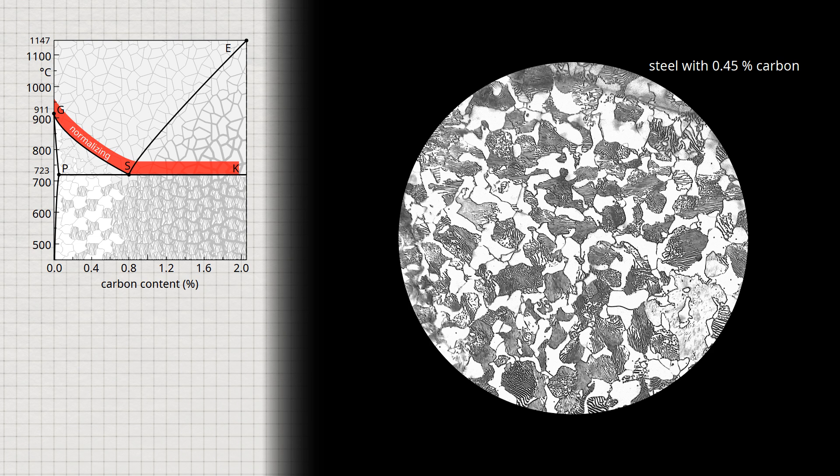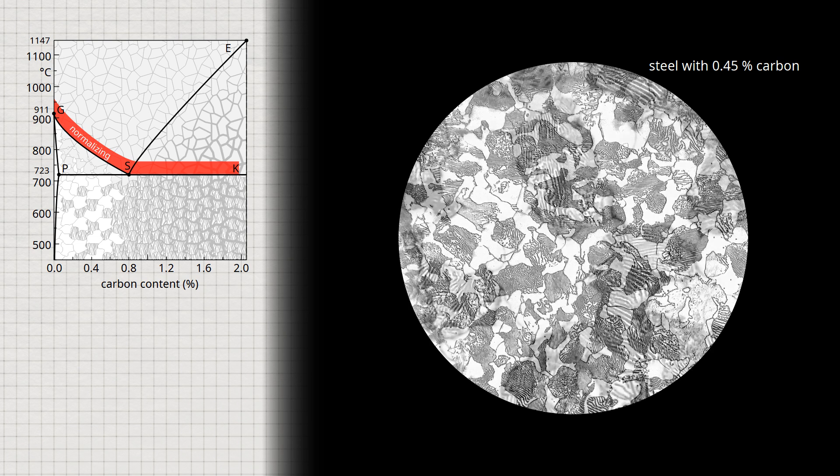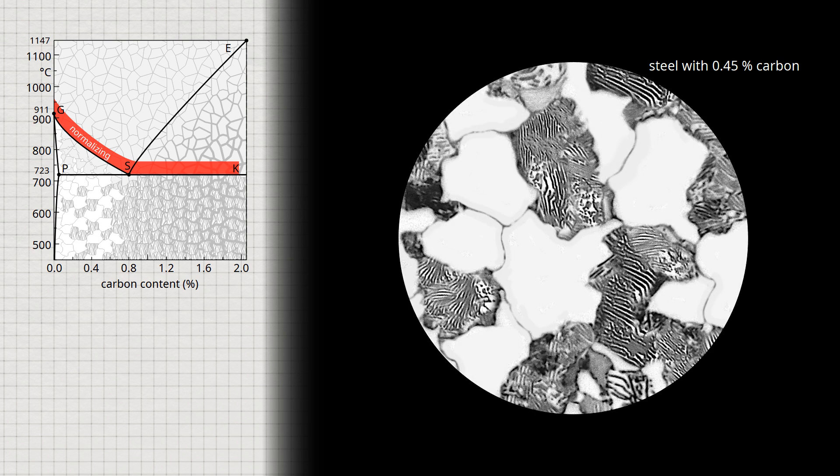The temperature for normalizing should not be more than about 30 degrees Celsius above the GSK line. Otherwise there is a risk of coarse grain formation. The reason for this is that large round grains are energetically more favorable than many small ones. Therefore, the microstructure always strives for the formation of a single large grain. This requires diffusion processes, which are favored by higher temperatures. Therefore, the temperature should be kept as low as possible in order to avoid the formation of coarse grains.